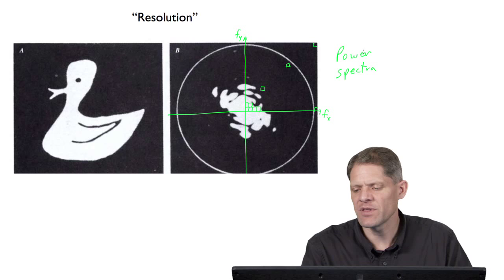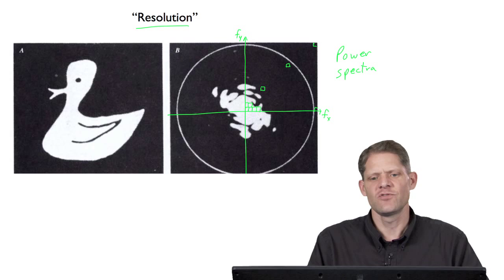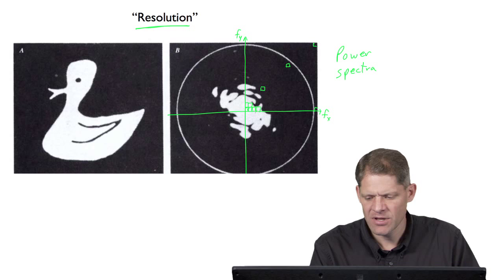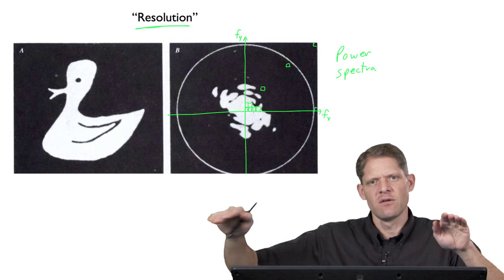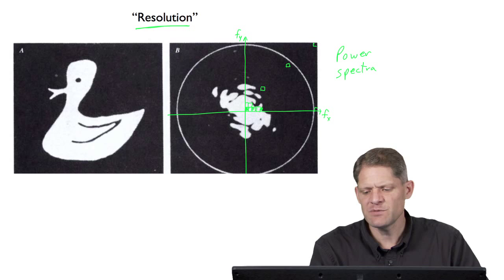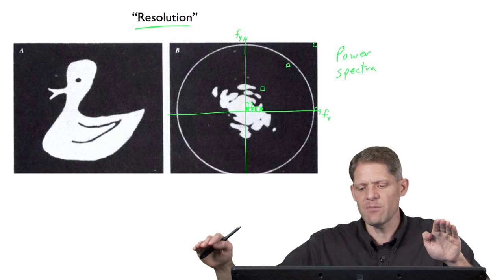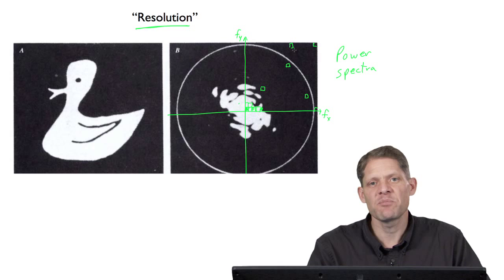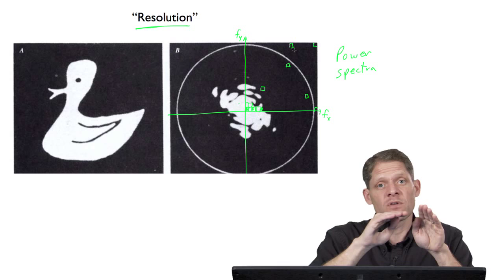We can now introduce the meaning of the term resolution. Pixels near the origin in power spectra represent sine waves that oscillate slowly — maybe once across the box — and we call those low resolution. On the other hand, pixels near the edge of the power spectra represent waves that are oscillating very rapidly, perhaps every other pixel at the Nyquist frequency, and we call those high resolution, high-frequency components of the image.